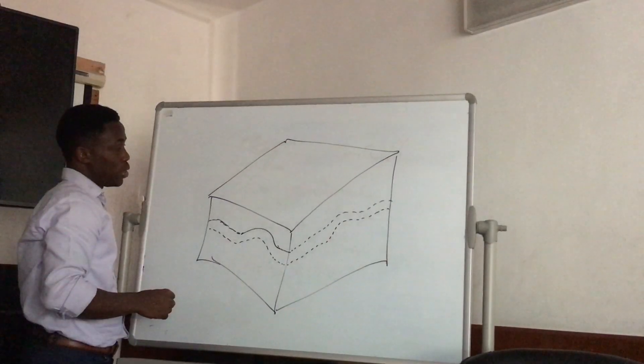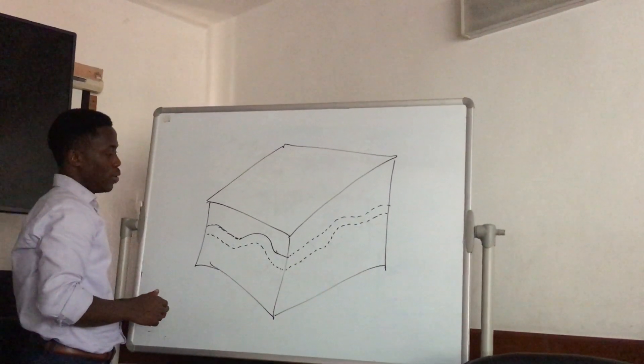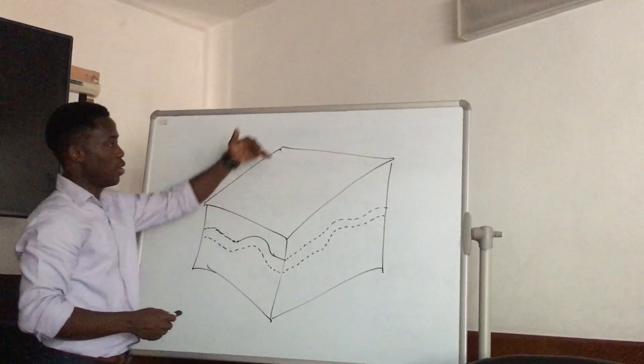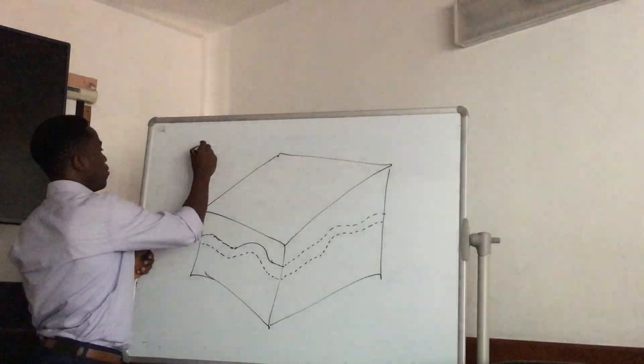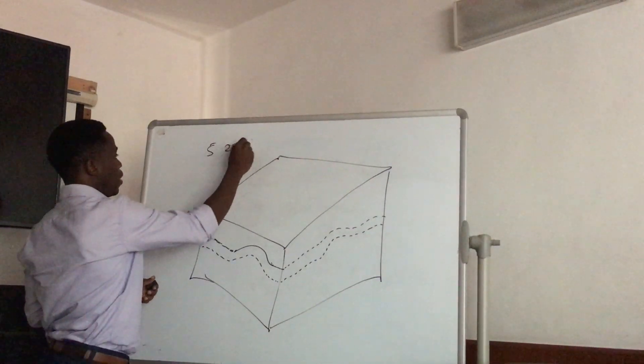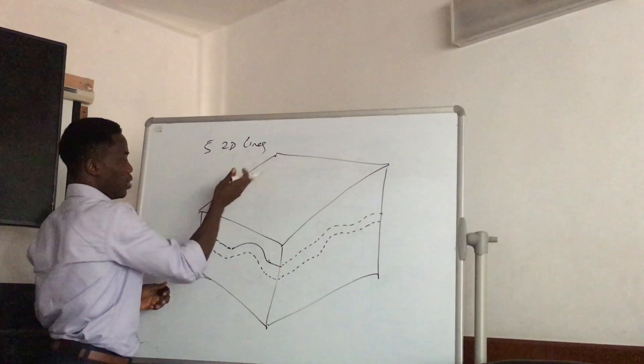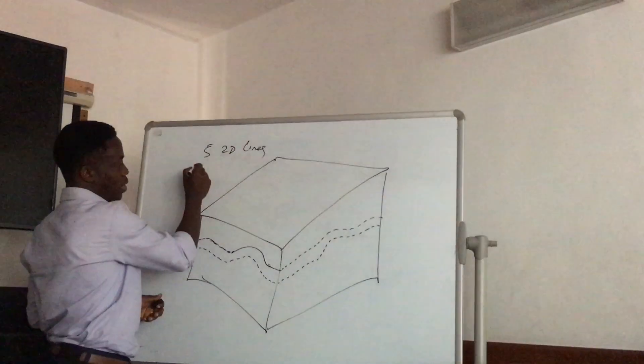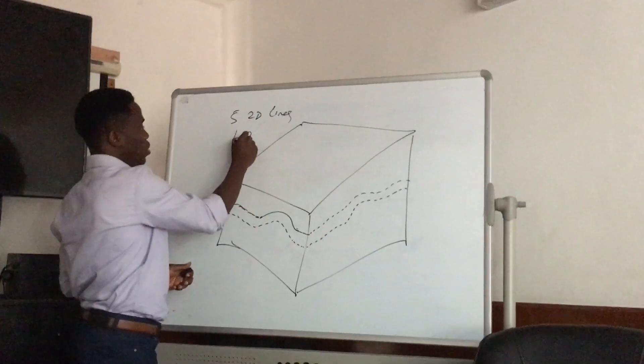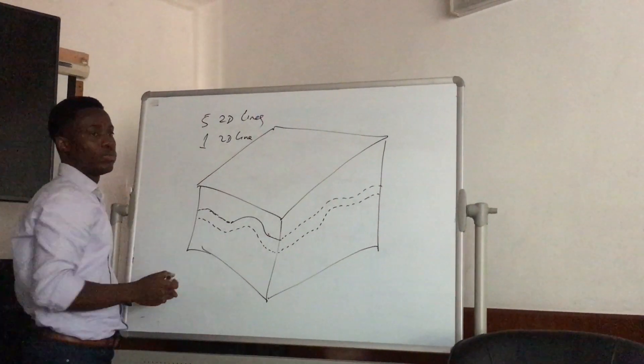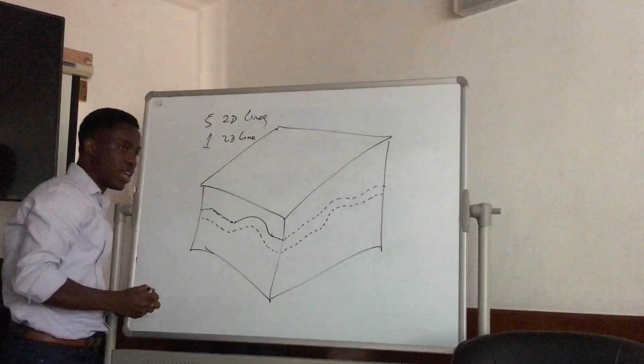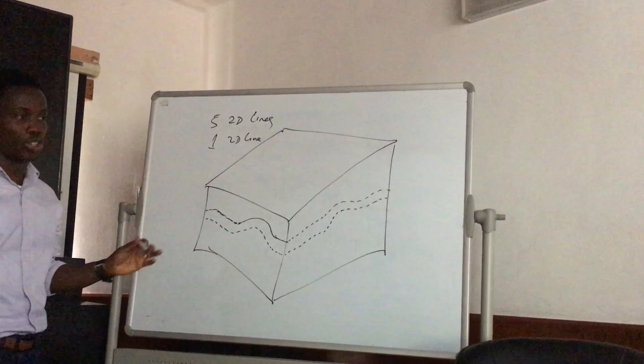One thing that can drive my decision to take 2D lines, several 2D lines, let's say five 2D lines along this direction and one 2D line the other direction, is understanding what the regional geology is.